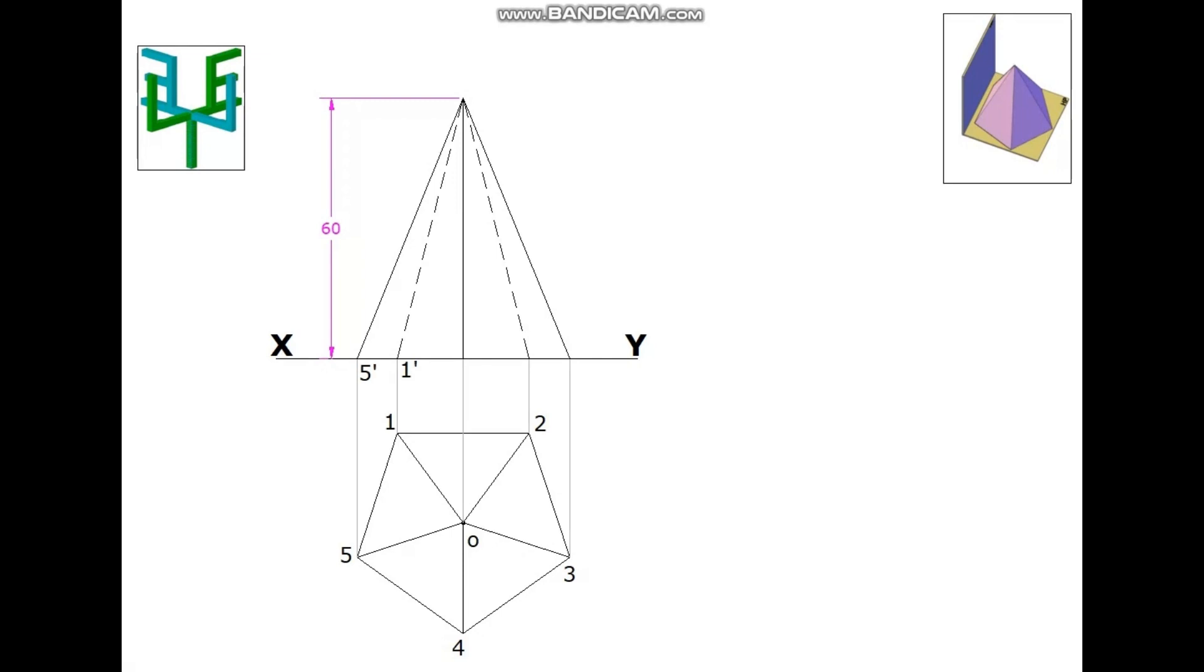In the elevation, slant edges 5'O', 3'O', 4'O' are visible, whereas 1'O' and 2'O' are invisible.